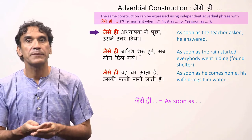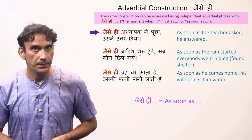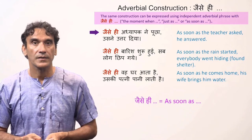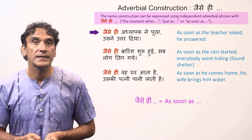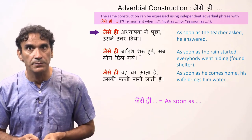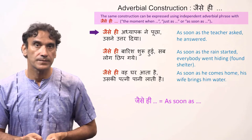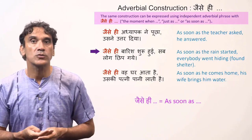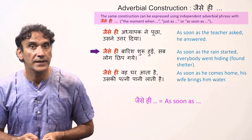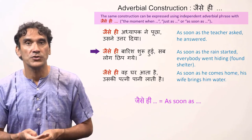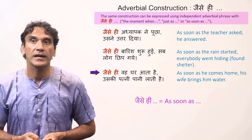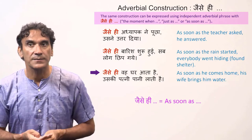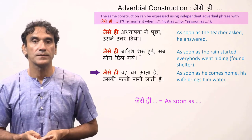'Jaise hi adhyapak ne puchha, usne uttar diya' — as soon as the teacher asked, he answered. In all these sentences you can see that the two clauses are separated by a comma. 'Jaise hi baarish shuru hui, sab log chhip gaye' — as soon as the rain started, everybody went hiding and found shelter. 'Jaise hi wo ghar aata hai, uski patni paani lati hai' — as soon as he comes home, his wife brings him water.